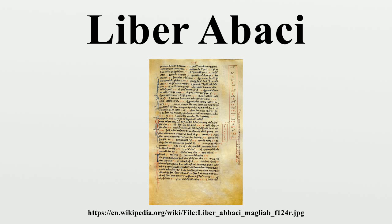In other words, in his book Fibonacci advocated the use of the digits 0 to 9 and of place value. Until this time Europe used Roman numerals, making modern mathematics almost impossible. The book thus made an important contribution to the spread of decimal numerals. The spread of the Hindu-Arabic system, however, was long drawn out, taking many more centuries to spread widely, and did not become complete until the later part of the 16th century, accelerating dramatically only in the 1500s with the advent of printing.